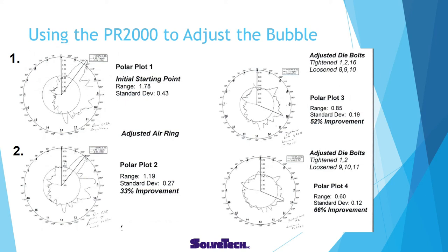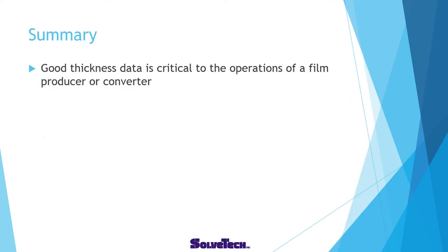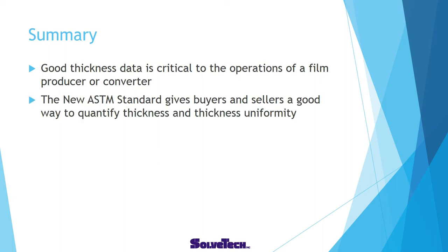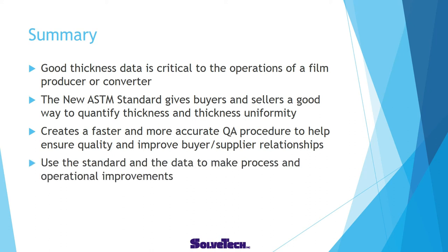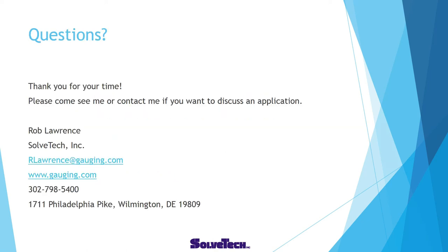In summary, good thickness data is critical to the operations of a film producer or converter. The new ASTM standard gives buyers and sellers a good way to quantify thickness and thickness uniformity. It creates a faster and more accurate QA procedure to help ensure quality and improve buyer and supplier relationships. You can use the standard and the data to make process and operational improvements. Feel free to reach out with questions — you can email, call, or visit our website at solvtech.com and see the device for yourself. We offer sample testing.